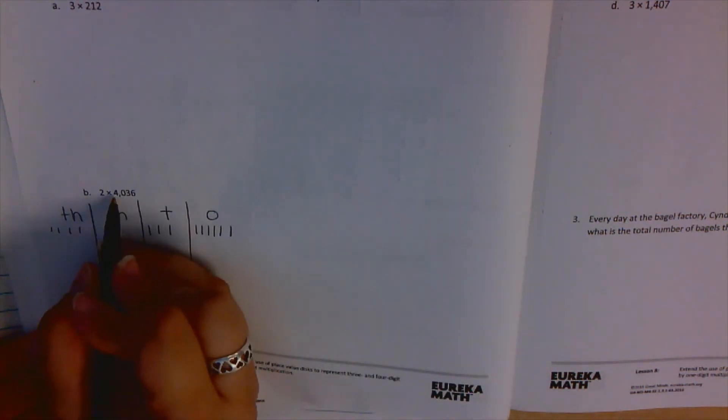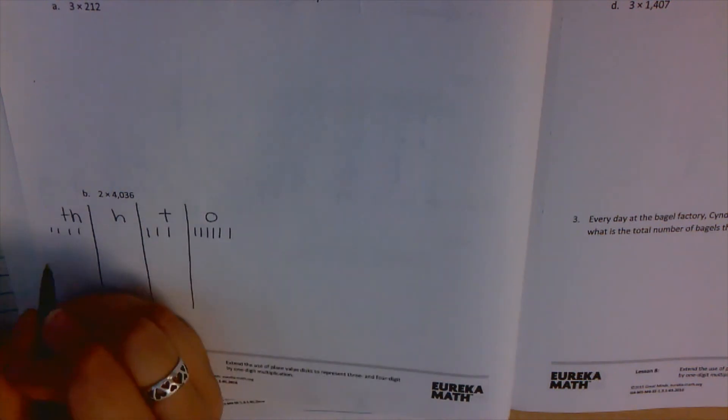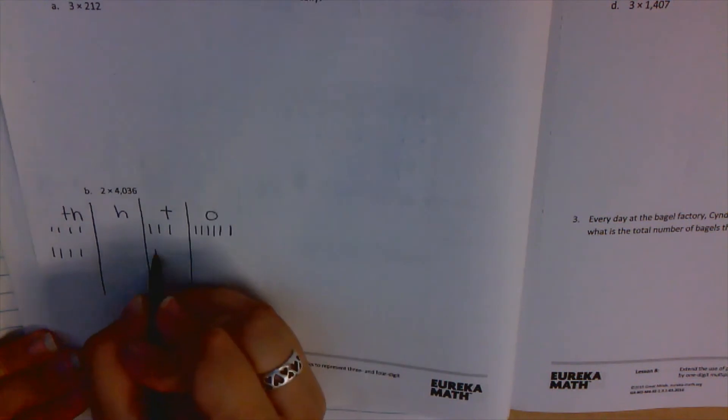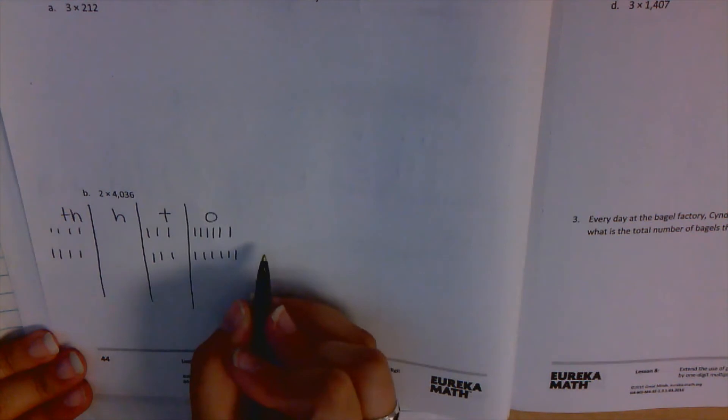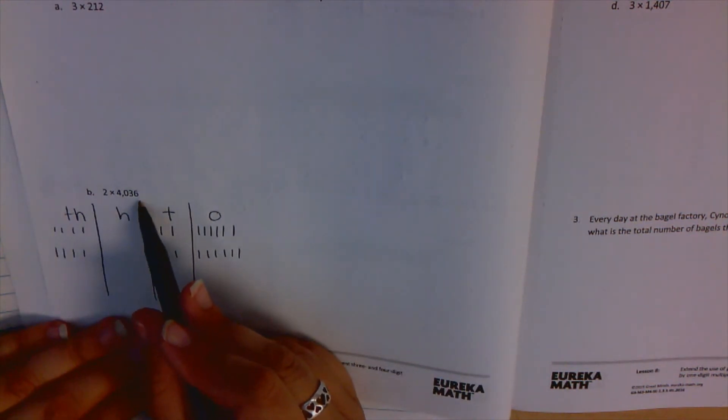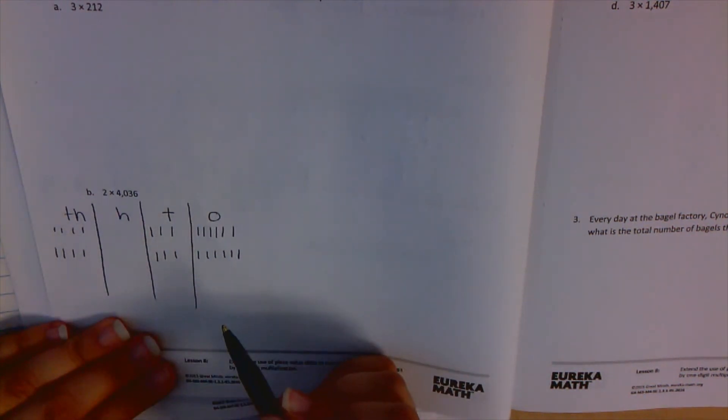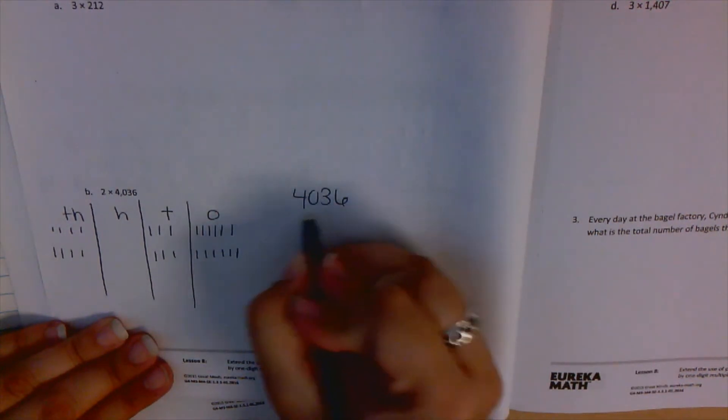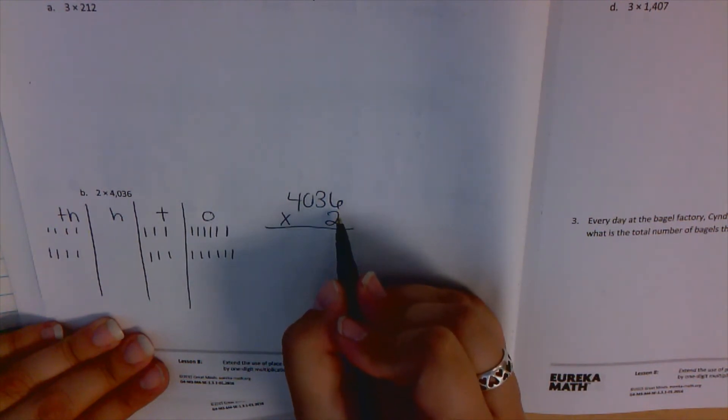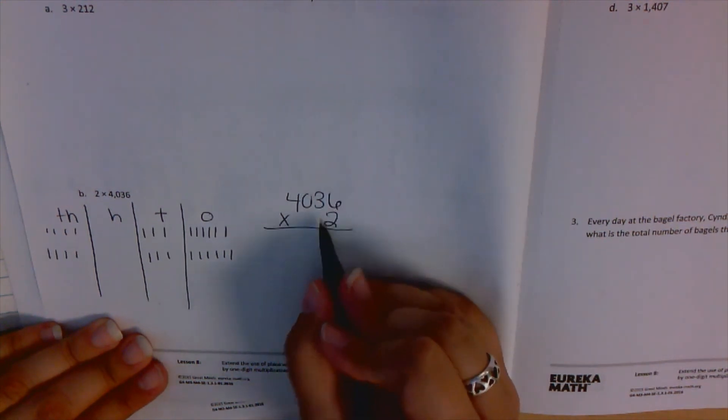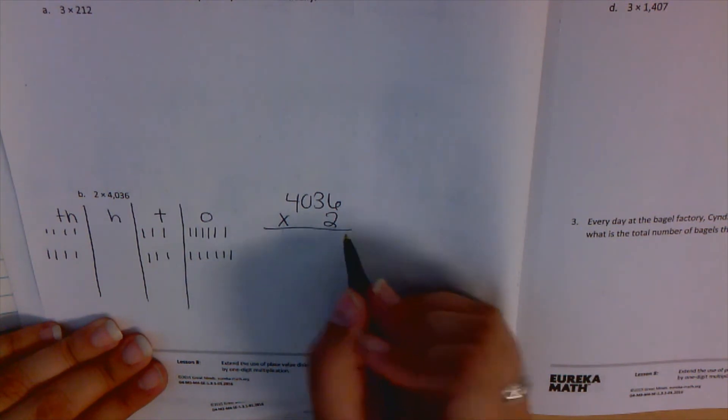This needs to be done two times. So there's the first time. Let's do 4,036 the second time. 4,030, 1, 2, 3, 4, 5, 6. So we have 4,036 two times. Going to do my expression. And I'm now going to do partial products where I'm going to multiply each place value, each part, by 2.